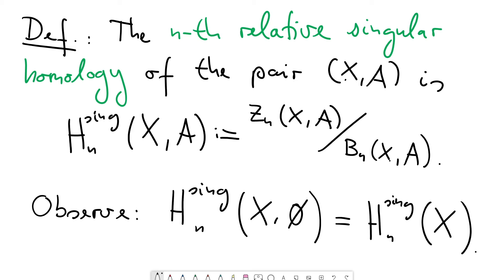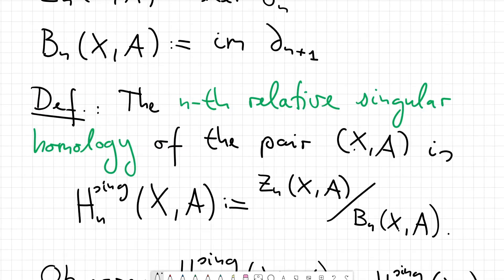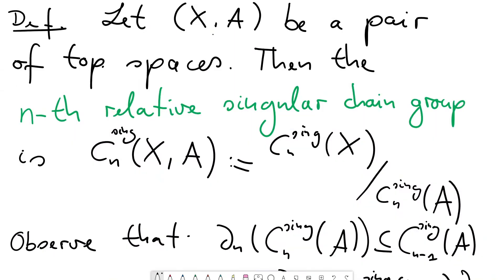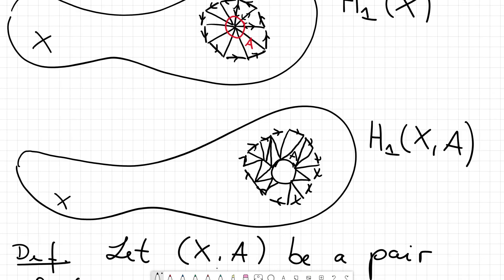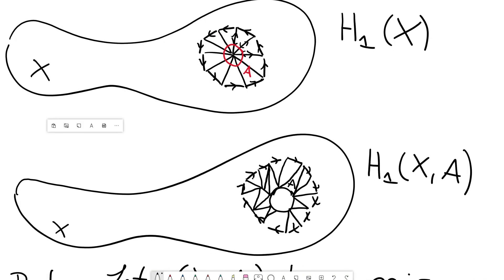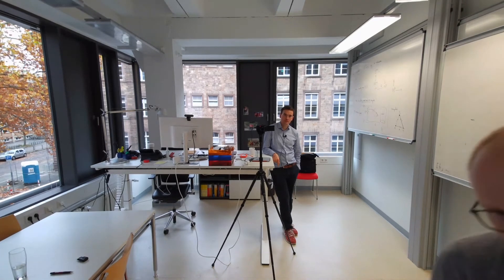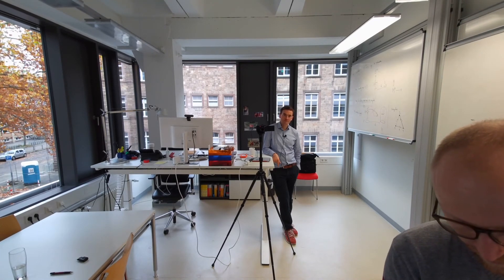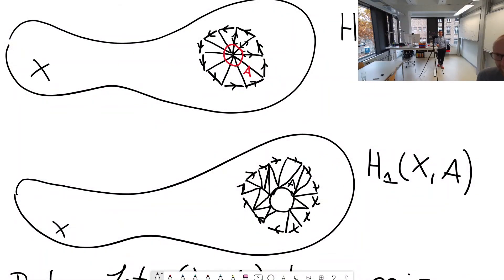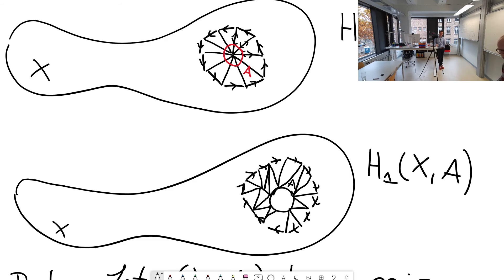Going back to the picture to clarify relative boundaries: if you take the first picture with a circle-shaped one-chain and there is no hole in your space, then this is a boundary. If you do have a hole, this would not be a boundary in the absolute sense, but it would be a boundary when considering the relative homology — so it is a boundary in the relative chain complex.